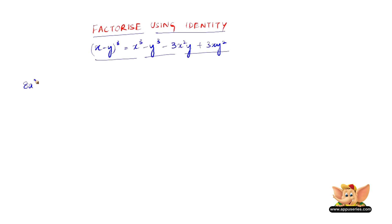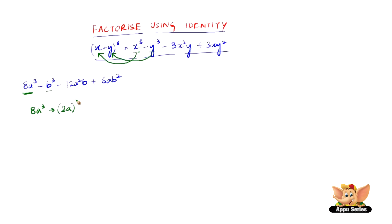Let us consider 8a cube minus b cube minus 12a squared b plus 6ab squared. Here, 8a cube is x cube and b cube is y cube. Just like how x cube gives x and y cube gives y, we need to find what 8a cube is. 8a cube is nothing but 2a the whole cube, and b cube is simply b the whole cube. Since b does not have any coefficient, it's fine to write it as b cube.